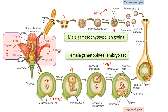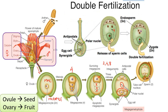Now let us understand fertilization. The pollen grain falls on the stigma. If the pollen grain is compatible, the stigma provides a conducive atmosphere with enzymes and lipids for germination, forming a pollen tube. The pollen tube grows towards the ovule. Meanwhile, the generative cell forms two male gametes. The pollen tube carries these male gametes towards the embryo sac of the ovule.